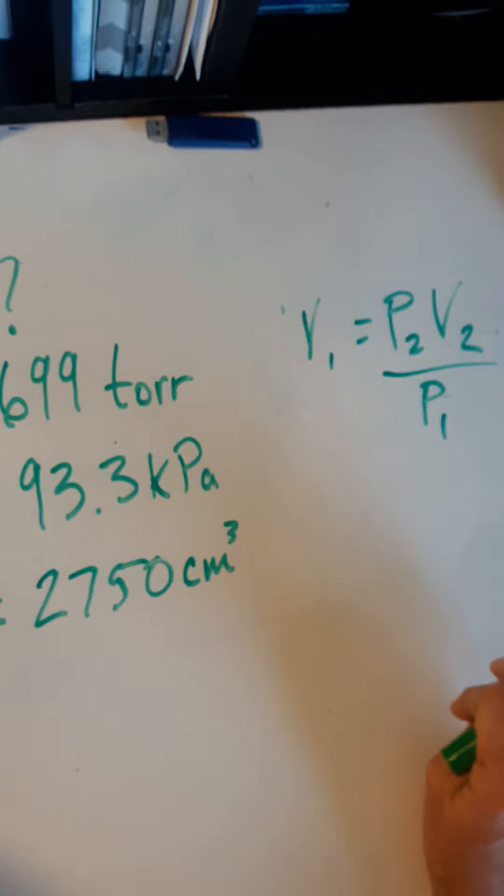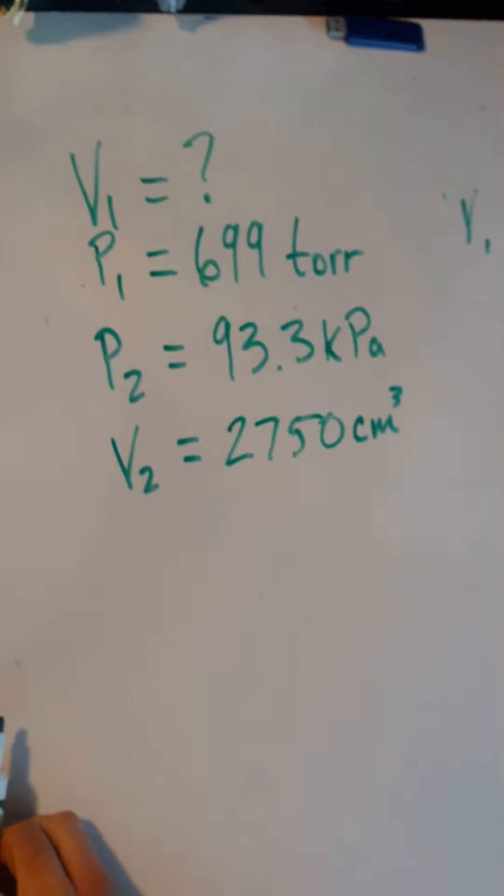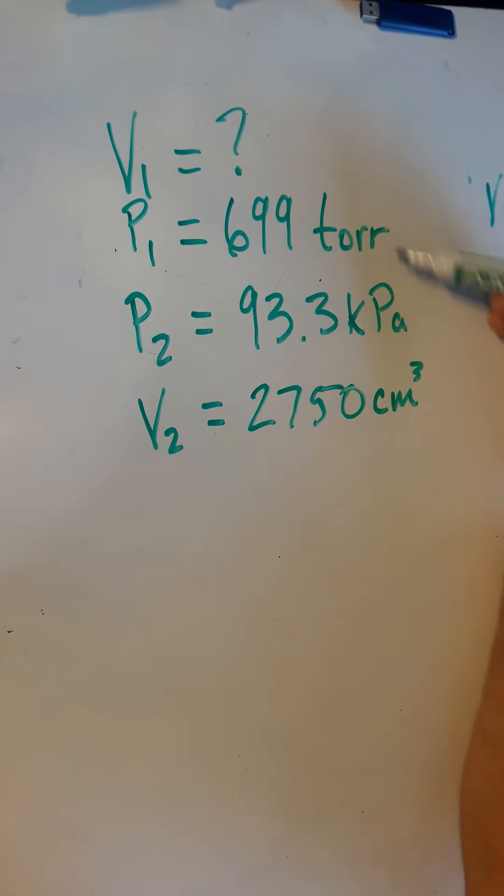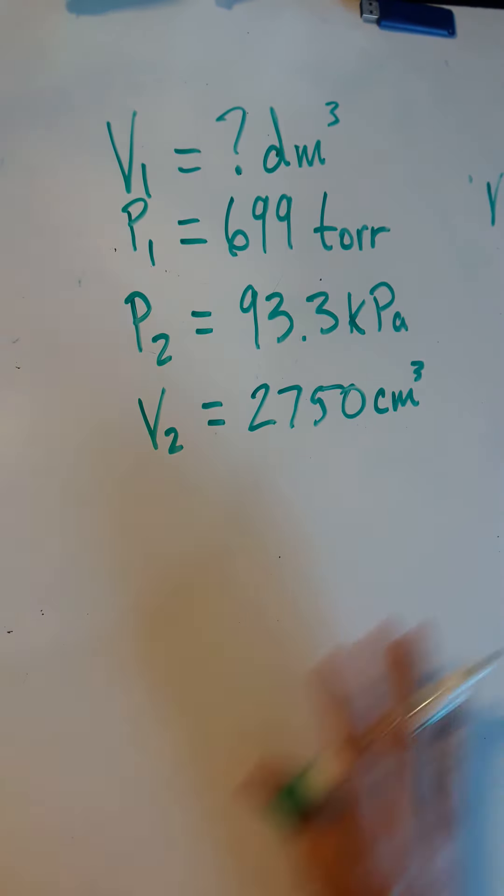As the pressure goes up, the volume goes down, like the inverse relationship. Now I'm going to do this all in one step because I like to use the chart. You could though, if you notice, the two pressures are different units. You could separately convert the torr to the kPa or the kPa to the torr. And then your centimeters cubed into decimeters cubed because it wants this volume in decimeters cubed. I'm going to do it all in here.